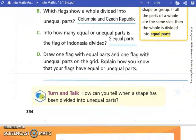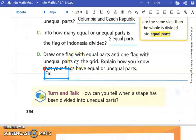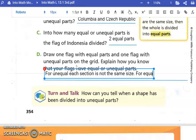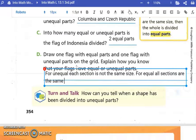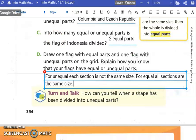Down here on the bottom, it says explain how you know that your flags have equal or unequal parts. Well, how do we know that? Because they don't have the same amount of space. Each section doesn't have the same amount of space or size. For unequal, each section is not the same size. For equal, all sections are the same size.